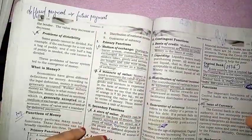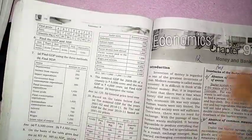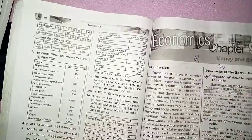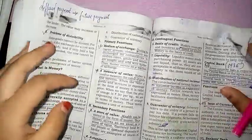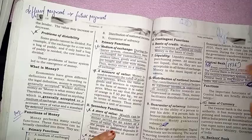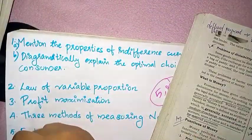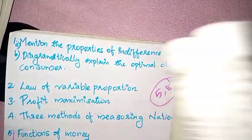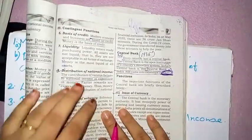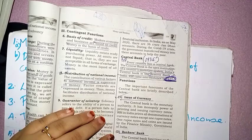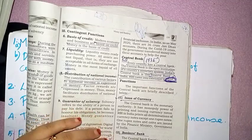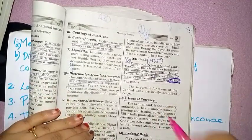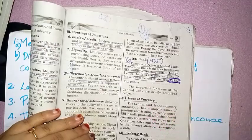Next we have to study the disadvantages and drawbacks of the barter system. That's why we have the central bank. We have the RBI functions. The RBI is the central bank. The issue of currency — we have the current account. The bank must be the RBI.